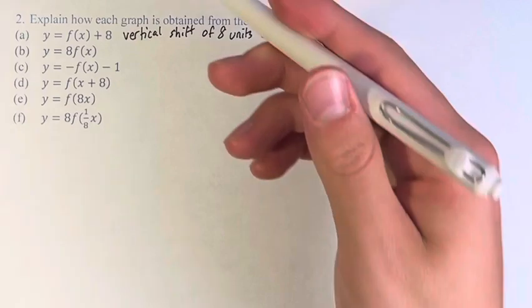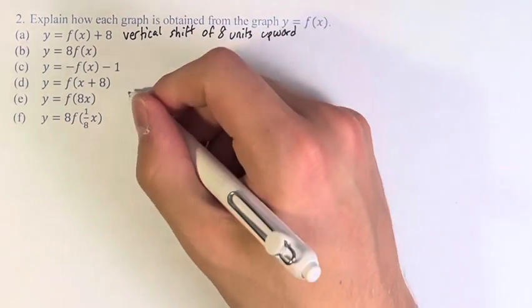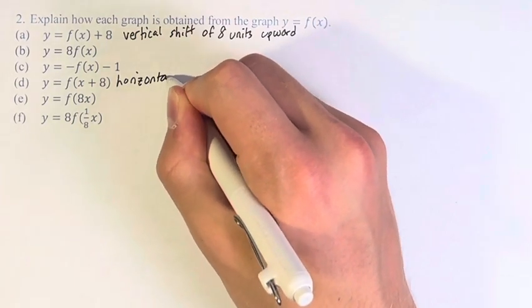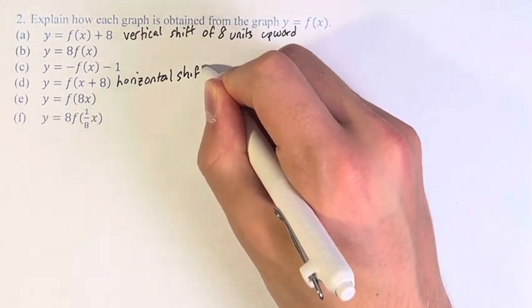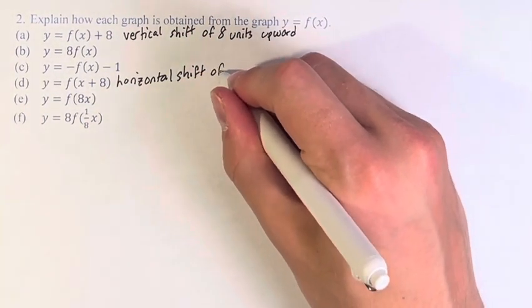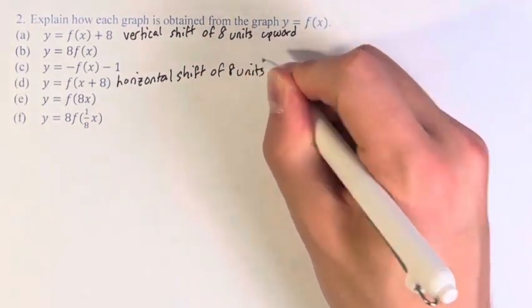I will skip down to d, which is very similar. This is a horizontal shift because the addition is done within the actual calculation of the function. So this is 8 units to the left.